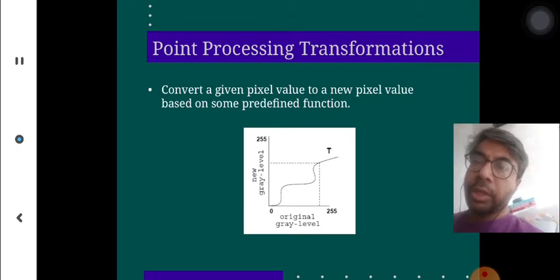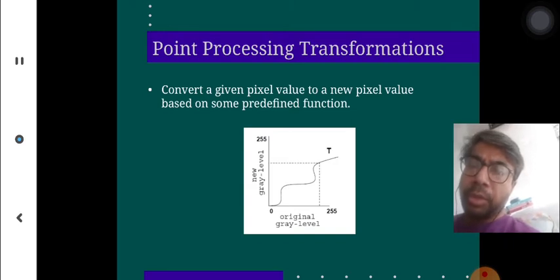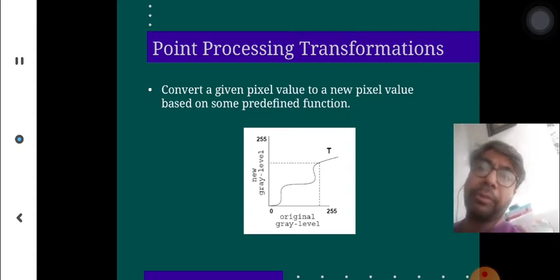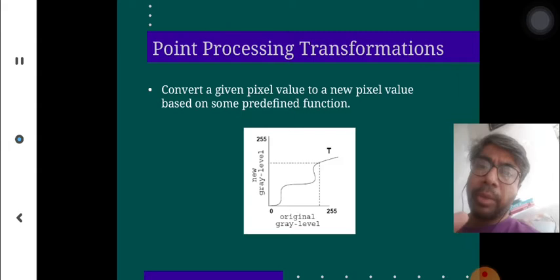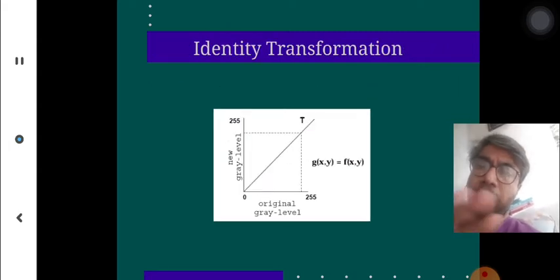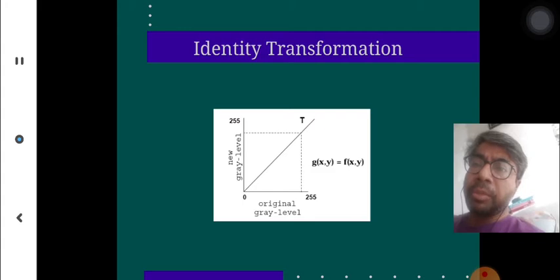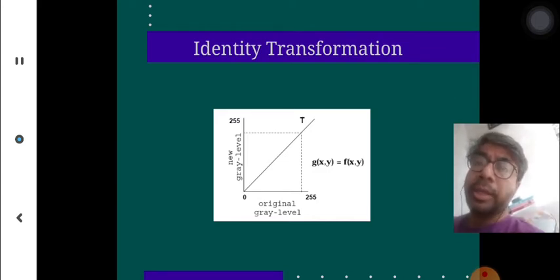Point processing transformation means you convert a given pixel value to a new pixel value based on some defined function. You may change the intensity level using a different function — you are transforming a function into a different aspect. Identity transformation means you are looking at a two-dimensional function with gray levels on both X and Y, finding new intensity levels by applying a function.